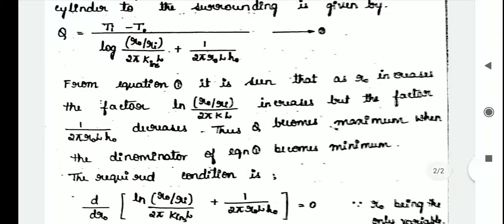From the equation, it is seen that as R0 increases the factor log of R0 divided by Ri upon 2pi KL increases. But the factor 1 divided by 2pi R0 L into H0, that is 1 divided by H0 into A0, decreases. Thus Q becomes maximum when the denominator of the equation becomes minimum.